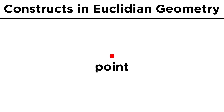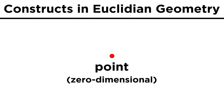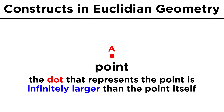First we look at a point. This is nothing more than a location in space. It is zero-dimensional, meaning that it has no dimensions of any kind. We represent points with little dots and some capital letter, making sure to realize that the dot we draw is infinitely larger than the point it is meant to represent.